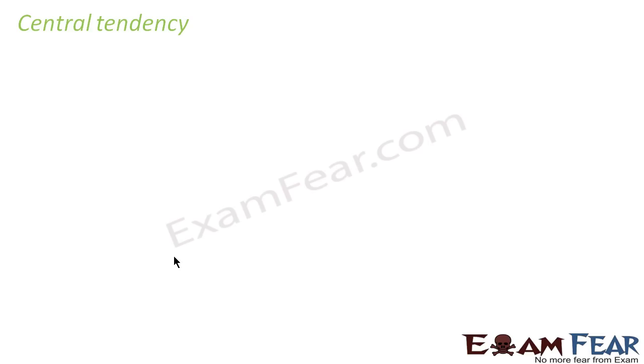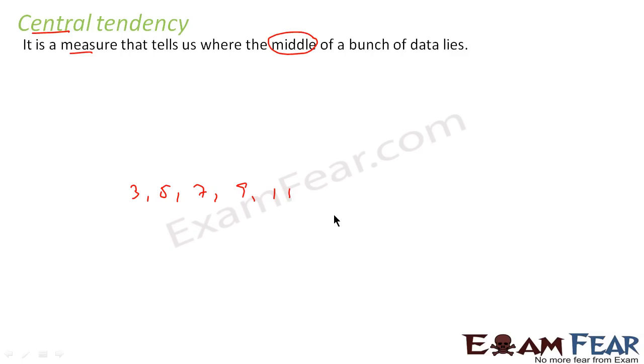Before we move ahead with statistics, let me cover the crucial term called central tendency. We have covered these terms before, but let me cover central tendency again. It is a measure that tells us where the middle of a bunch of data lies. By middle of the bunch of data, I mean for example I have numbers 3, 5, 7, 9, 11, 13. In this case, the middle data is somewhere around these values.